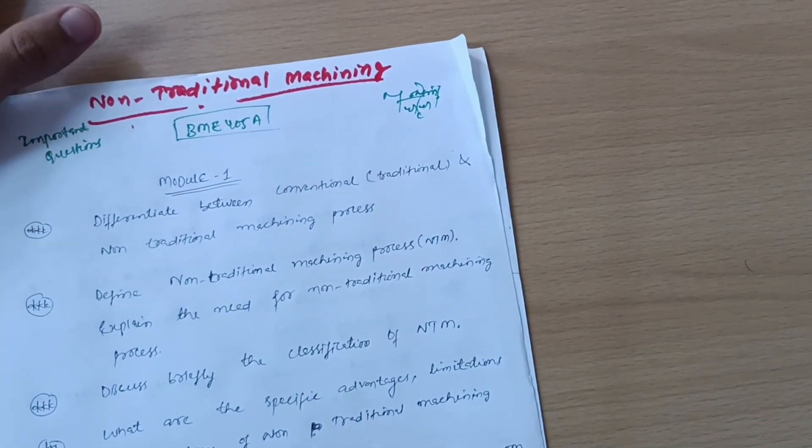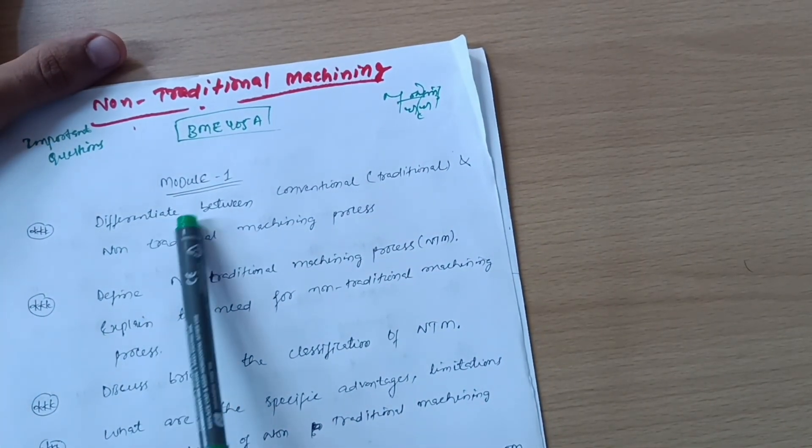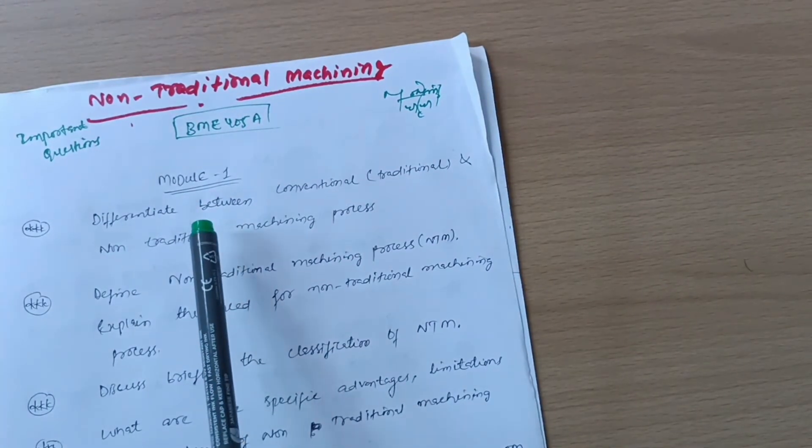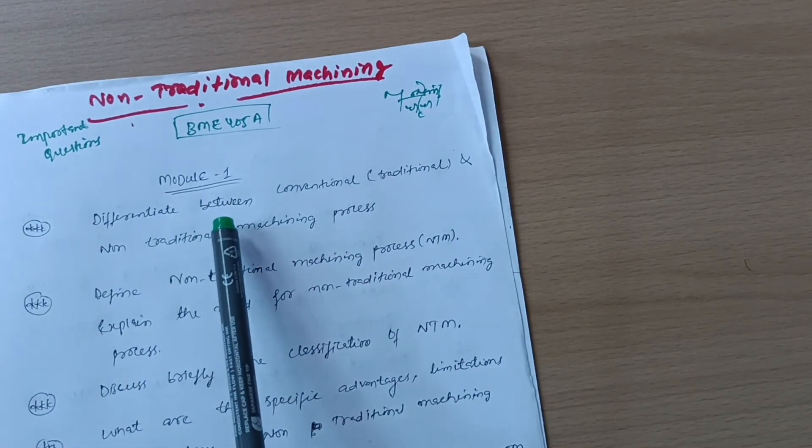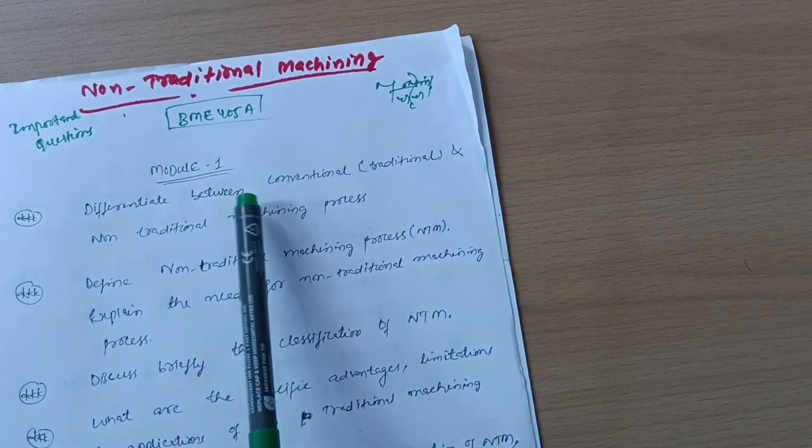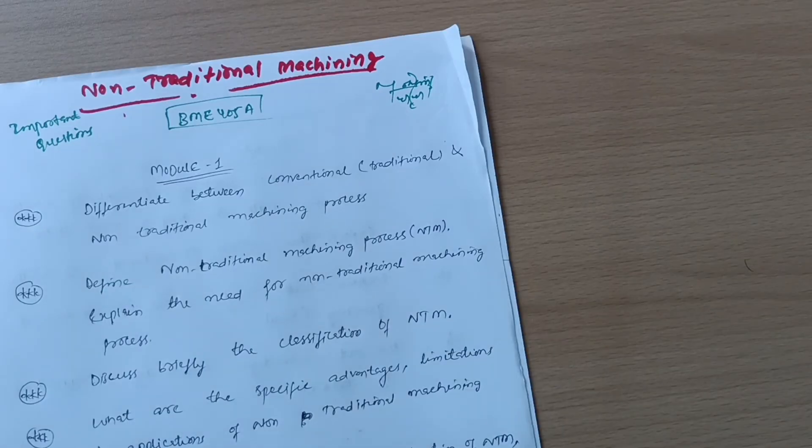This is the non-traditional machining subject. The important questions are here which I will discuss, by which you can score more than 90 marks. This is the only subject which is very difficult to fail. Listen to my words properly - I am not saying it is difficult to pass, it is difficult to fail. So you have got some idea how the subject will be.